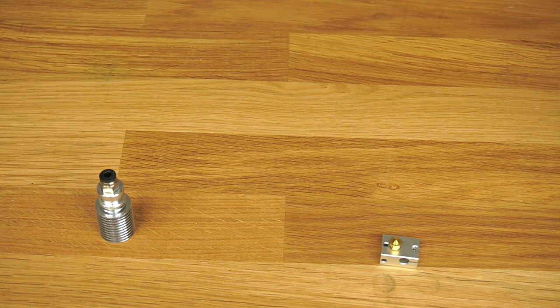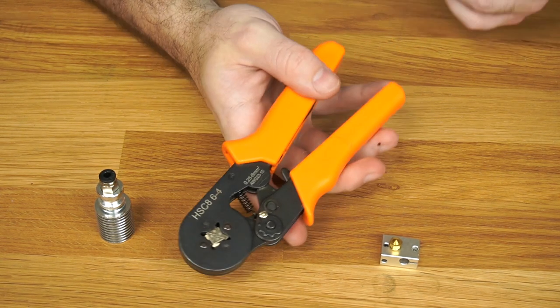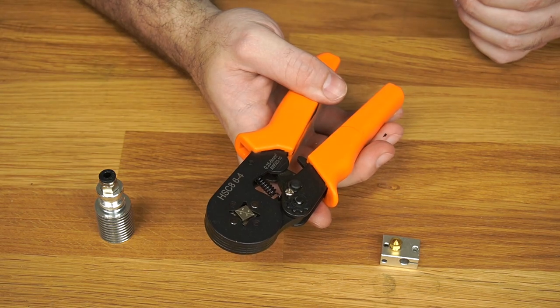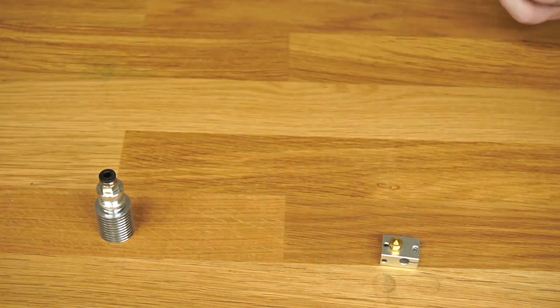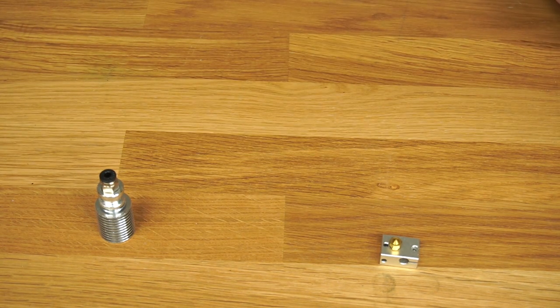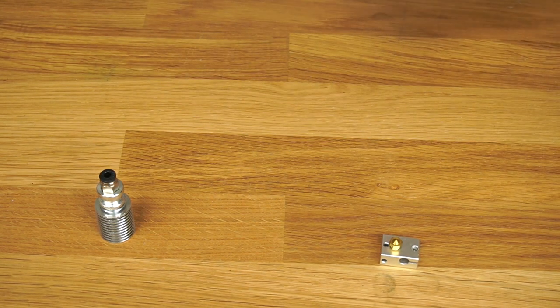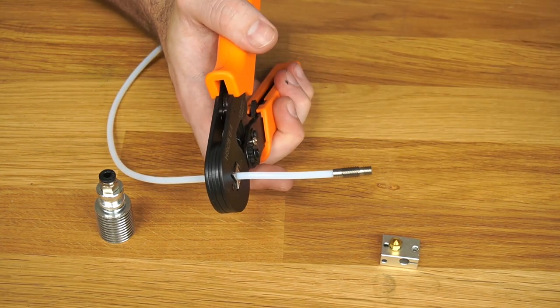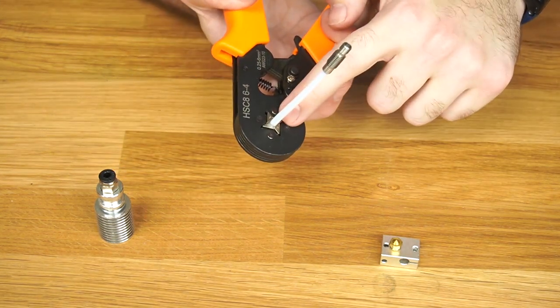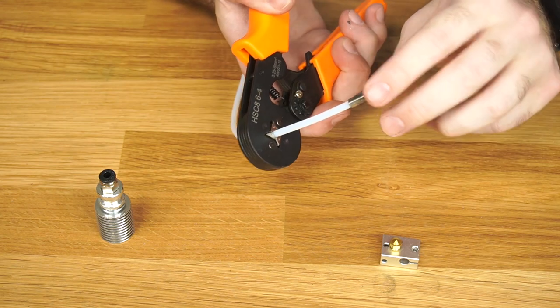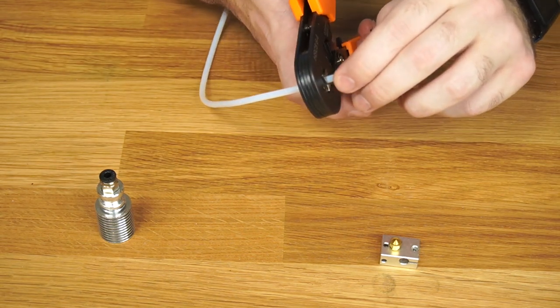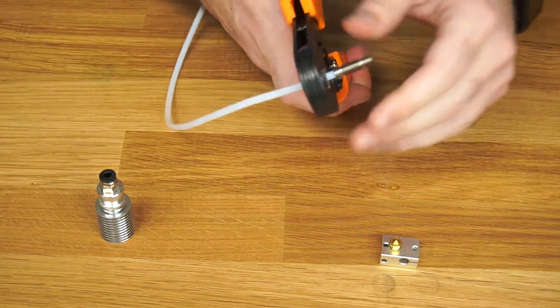So what I've found is if you can get your hands on one of these, this is a ferrule crimper for electrical circuits. And then you just thread it directly on to the PTFE tubing. And the reason I do this is that it applies even pressure to all sides of the tubing.